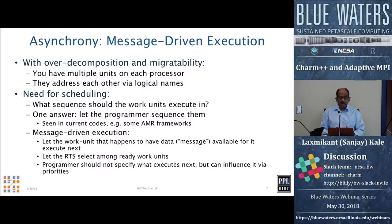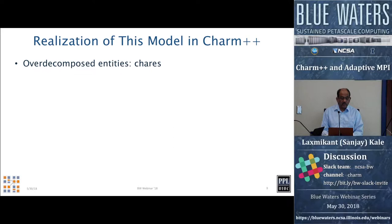Given that there are a large number of entities on each processor, the question is who gets to run next. There can be two views: one is let the programmer decide, and the other is implicit — let the runtime decide based on availability of messages and data. It is this latter view that Charm++ takes. So there's a scheduler that says which data is available, which method invocations are available, and picks those objects to run.